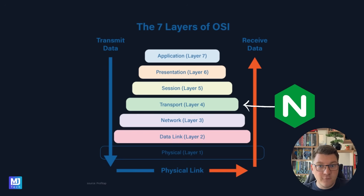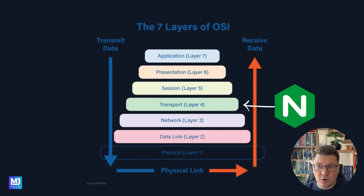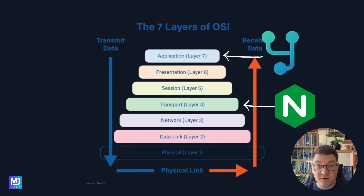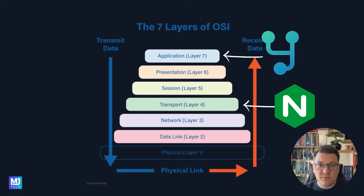NGINX is a layer 4 proxy, which means it works at the transport layer. At this layer we are still at the protocol level, typically TCP, and this has a significant impact on what NGINX can do when it comes to proxying. YARP is a layer 7 proxy, which means it works at the application layer, and here you have full information required to process an incoming request — meaning we can work with cookies or JSON web tokens and use them as part of our proxying rules.